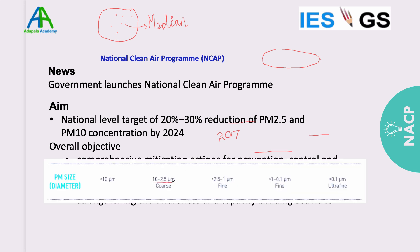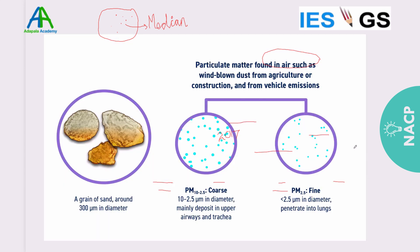If the size is between 10 and 2.5 micrometers, we call it a coarse particle. From 2.5 to 0.1 micrometers they are called fine particles, and if less than 0.1 they are called ultra-fine particles. A grain of sand or sugar is around 300 micrometers in diameter, so we can imagine how small PM 10 and PM 2.5 are. Different studies attribute particulate matter as a cause of pollution-related deaths.